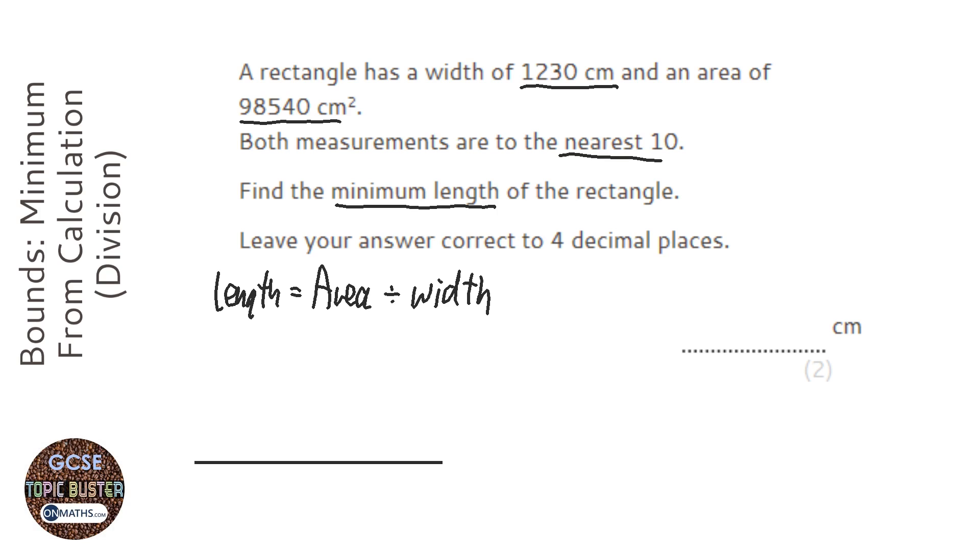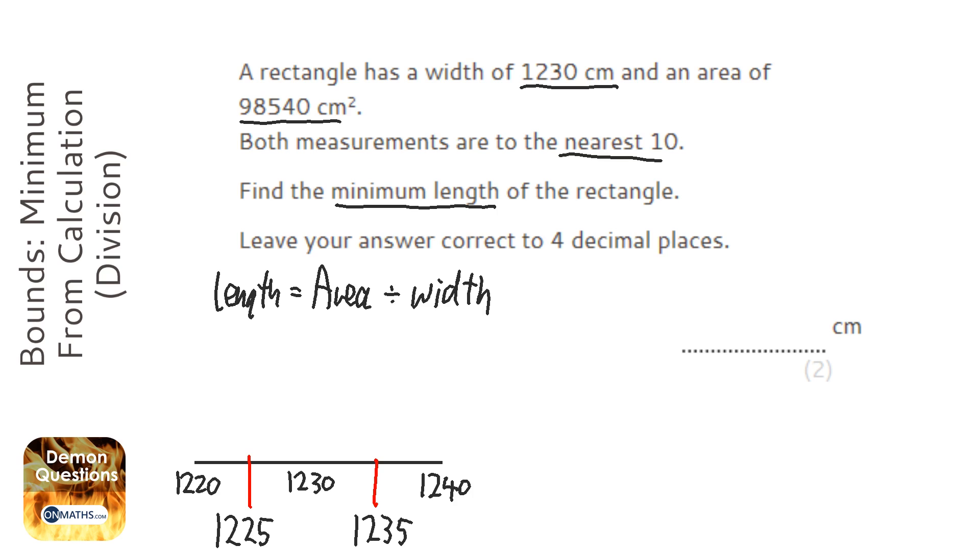So I'm going to do my line, and we have 1,230 in the middle. The next one down it could have been is 1,220. The next one up it could have been is 1,240. I'm going to do my lines to find the lower and upper bound. So 1,225 is halfway between these two numbers. So that's our lower bound, and 1,235 is our upper bound. I'm going to do exactly the same thing for the other measurement.